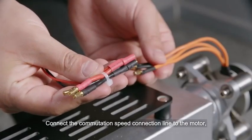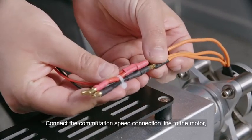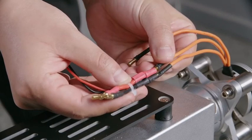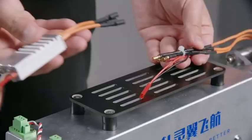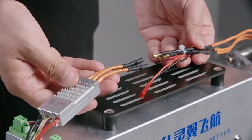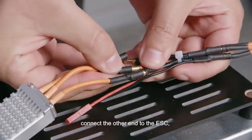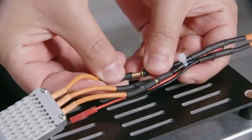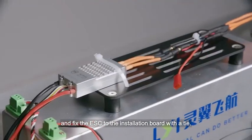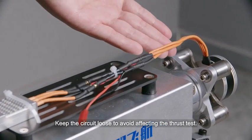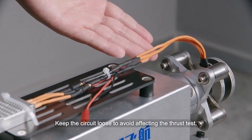Connect the commutation speed connection line to the motor. Connect the other end to the ESC and fix the ESC to the installation board with a tie. Keep the circuit loose to avoid affecting the thrust test.